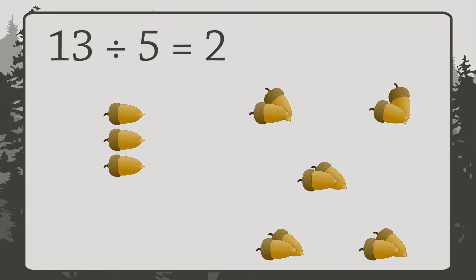We have 3 objects left over. We can't put these into any piles, since there's not enough to go around. So the remainder of this division is 3.